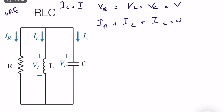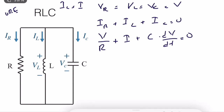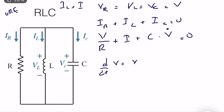Let's expand this equation. IR equals V divided by R. IL equals I, since it's the main variable we want to find. IC equals C times dV/dt, which equals zero. I'll use a shorter notation: dV/dt is written as V-dot. If we have a second derivative, it is V-double-dot.